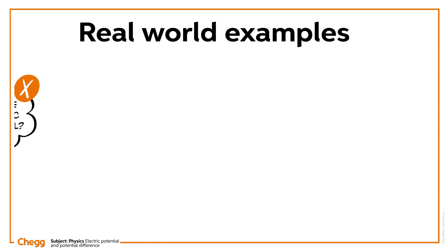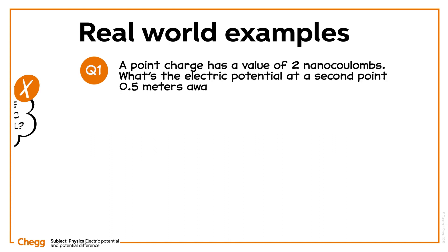Let's try using our new equations in two examples. Question one. A point charge has a value of two nanocoulombs. What's the electric potential at a second point 0.5 meters away? Let's take our equation for electric potential: V equals K times Q over R.